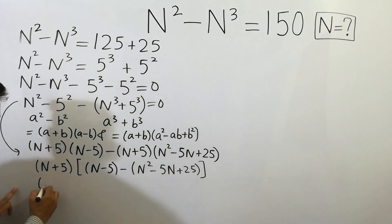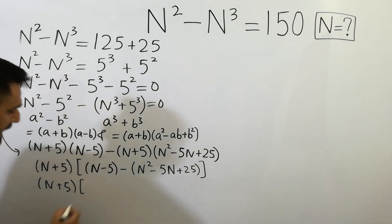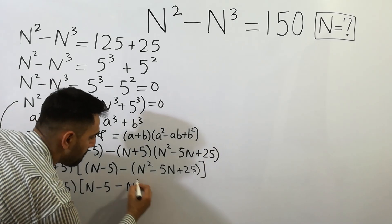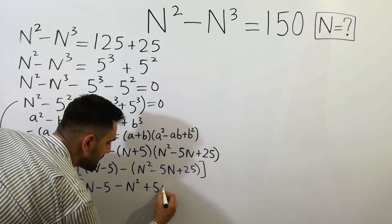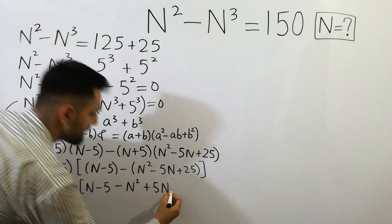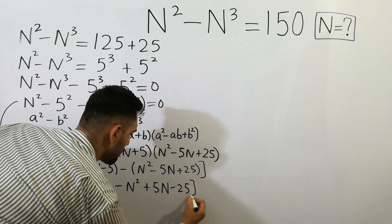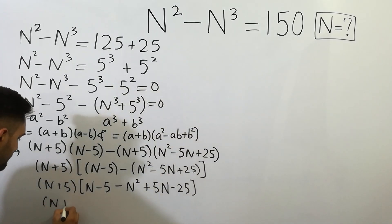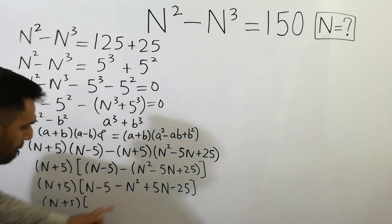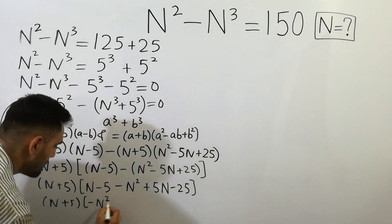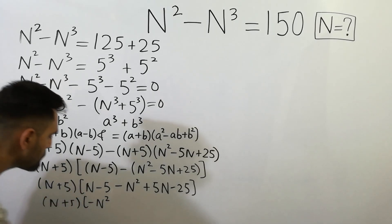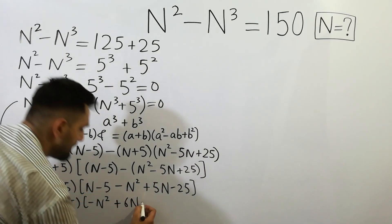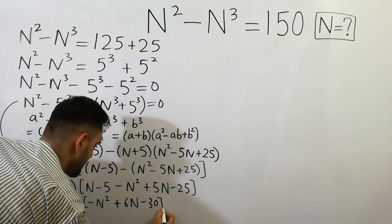If we further simplify, we get (n minus 5)(negative n squared plus 5n plus 25). Then we get (n plus 5) as a factor, and combining terms: 5 plus n equals to 6n, and minus 25 minus 5 equals to minus 30.